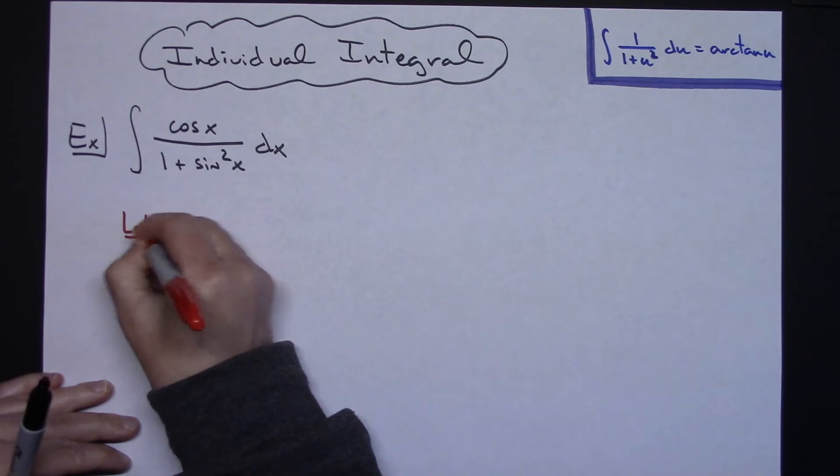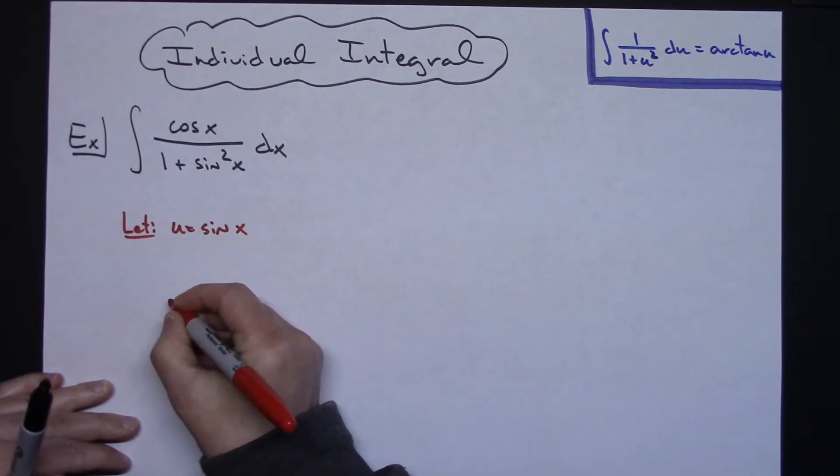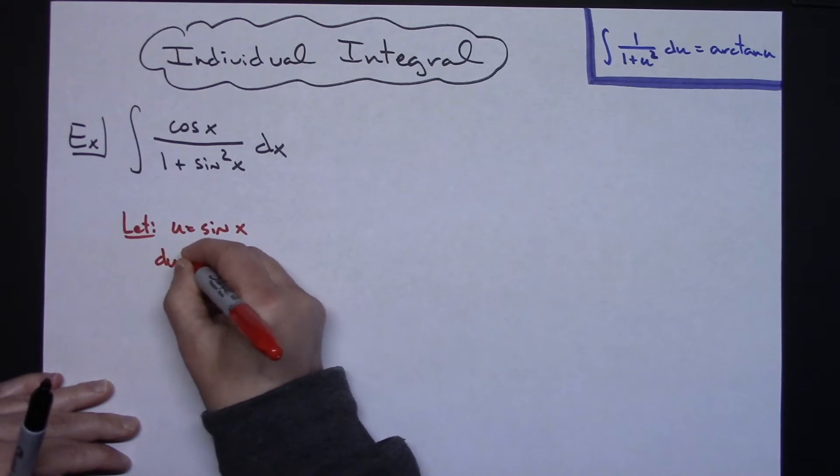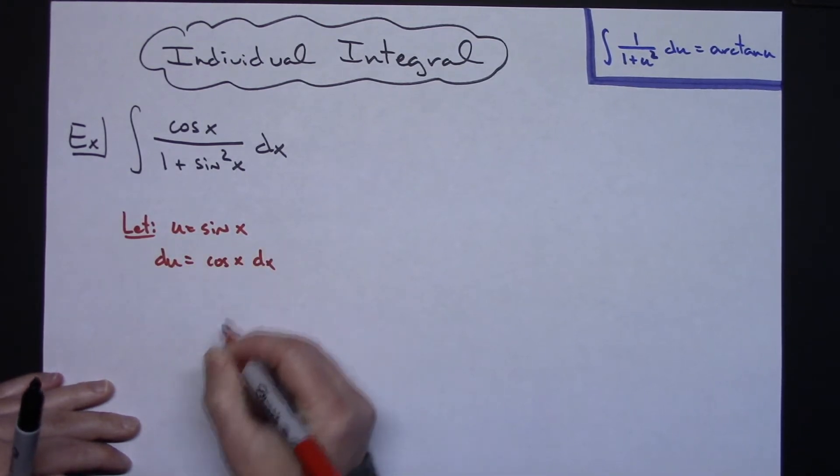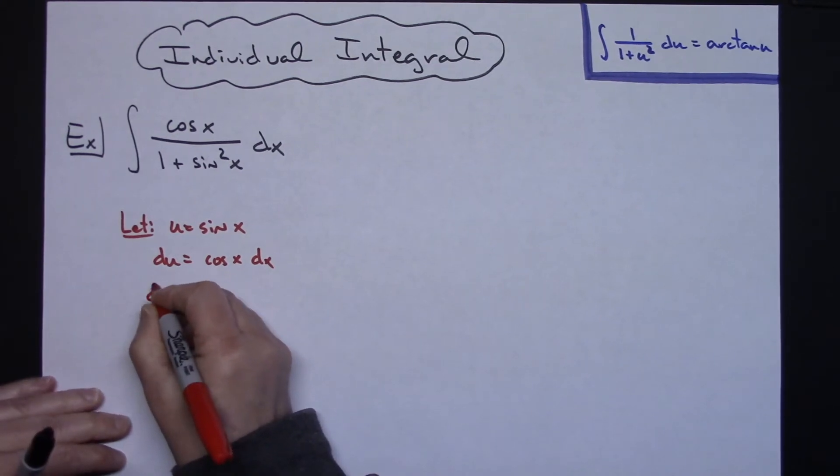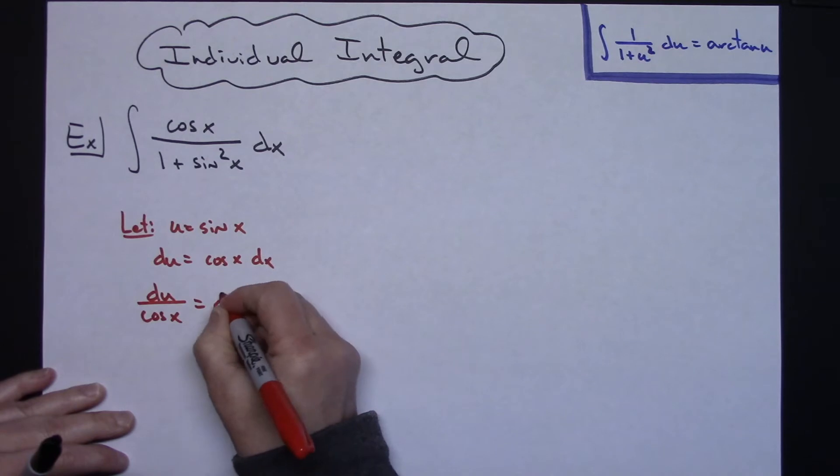Let u equal sine x. Taking the derivative of both sides, du equals cosine x dx. I'm going to solve for dx, so we'll have du over cosine x equaling dx.